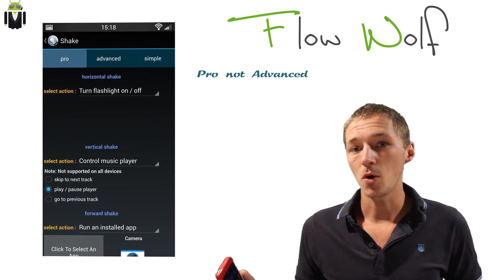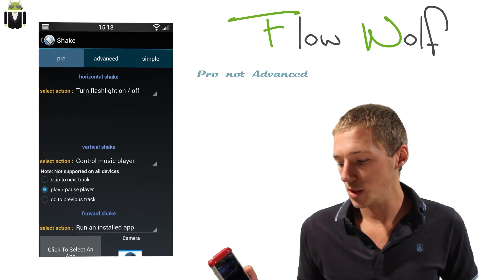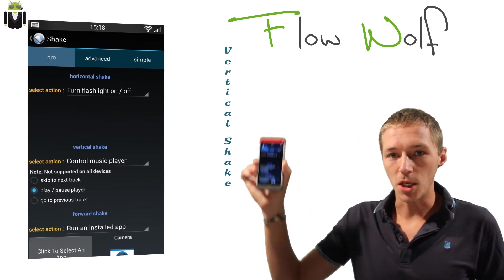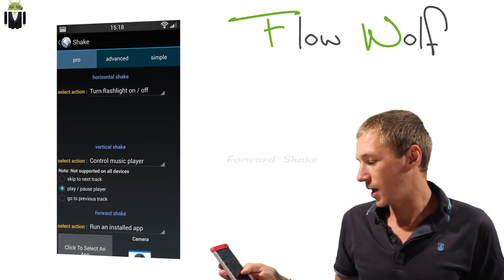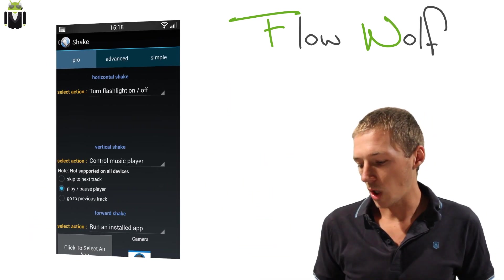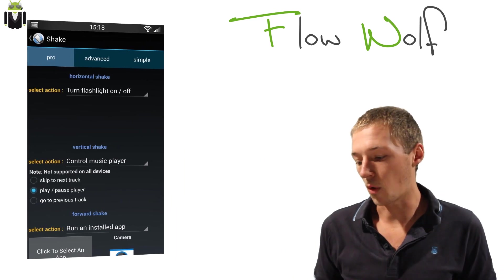The first one is horizontal shake, which is this one. The second one is vertical shake, this one. And the last one is forward shake, this one.